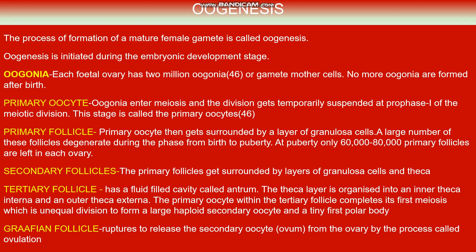Oogenesis is the formation of the female gamete. Unlike spermatogenesis, which starts only at puberty, oogenesis begins during the early embryonic stage. When a child is born, each fetal ovary has 2 million oogonia, or gamete mother cells, and no more oogonia are formed after birth.